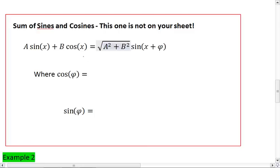Where cosine of phi is actually the value of A over square root of A squared plus B squared, and sine of phi is the value of B over square root of A squared plus B squared.